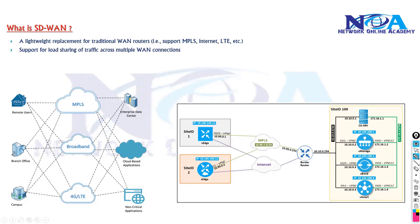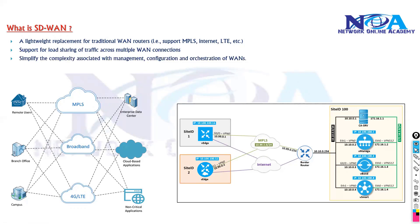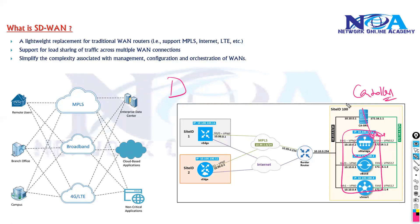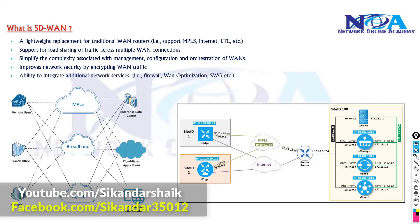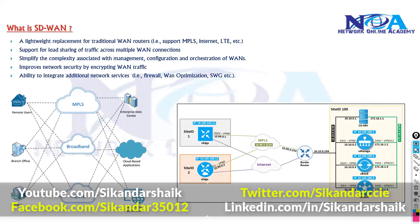SD-WAN provides load sharing between sites based on application requirements, and simplifies management from a centralized place — configuration, management, and orchestration of all WAN devices is done from a centralized SDN controller. It also improves network security because there is built-in encryption ensuring WAN traffic is encrypted whether it goes over the internet or MPLS. Additionally, it integrates other services like firewall and WAN optimization.